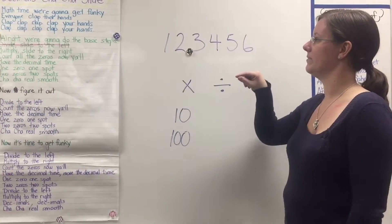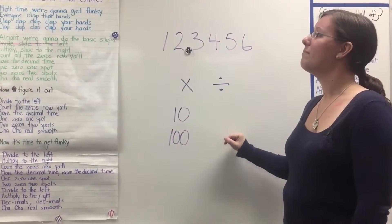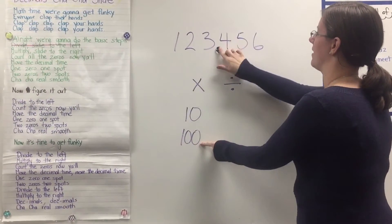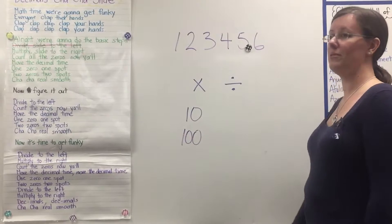Multiply to the right. Count the zeros. Move the decimal time. One zero, one spot. Two zeros, two spots. Cha Cha real smooth.